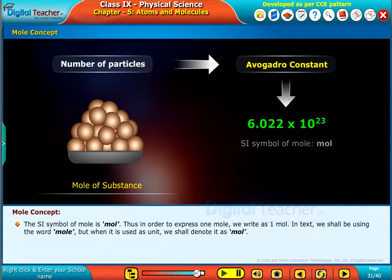The SI symbol of mole is mol. Thus, in order to express one mole, we write it as 1 mol. In text, we shall be using the word mole, but when it is used as unit, we shall denote it as mol.